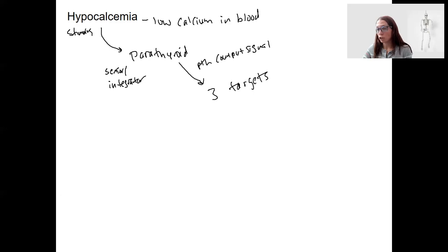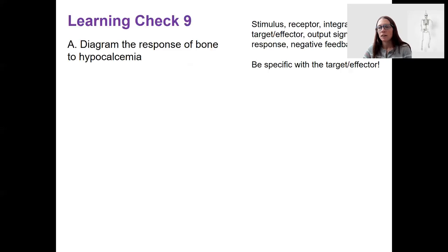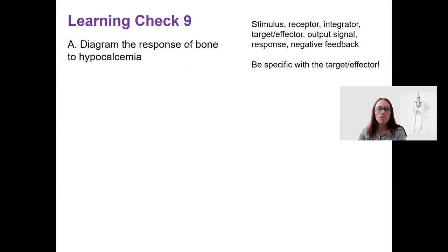And then the one I want you to do for your learning check next, in just a moment here, is draw this feedback loop specifically for bone and the specific effect that PTH has on bone and how that responds to low calcium. So here, that is the response of bone to hypocalcemia, and the specific response that the cells of the bone are going to have.